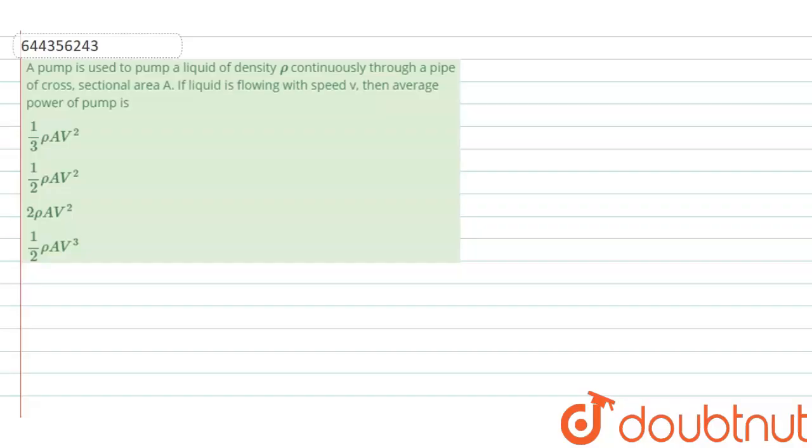Hi everyone, the question is given. A pump is used to pump a liquid of density ρ continuously through a pipe of cross sectional area A. If liquid is flowing with speed V, then average power of pump is.